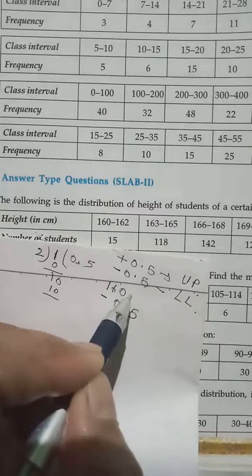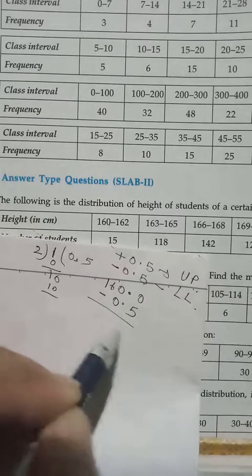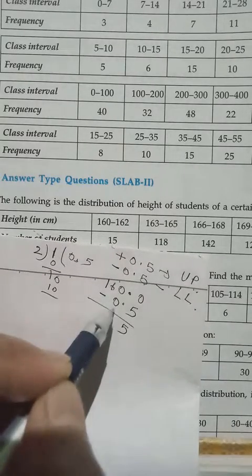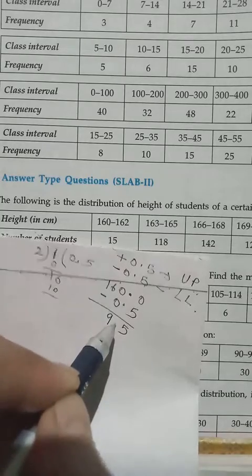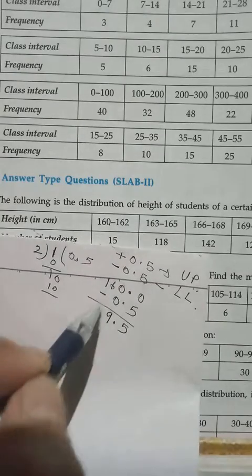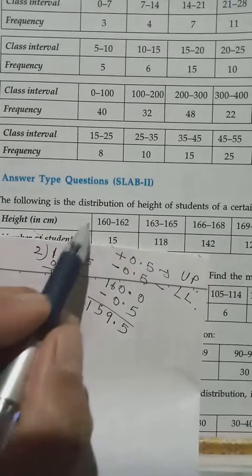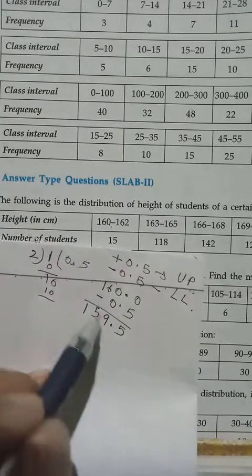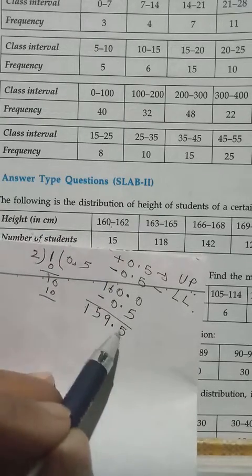160 has no decimal, so we can put it by ourselves. It will become 5, then 9 because we have to borrow from here. So now instead of 160, we have to write 159.5.